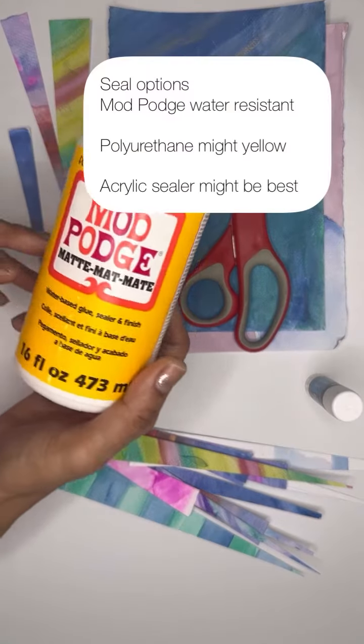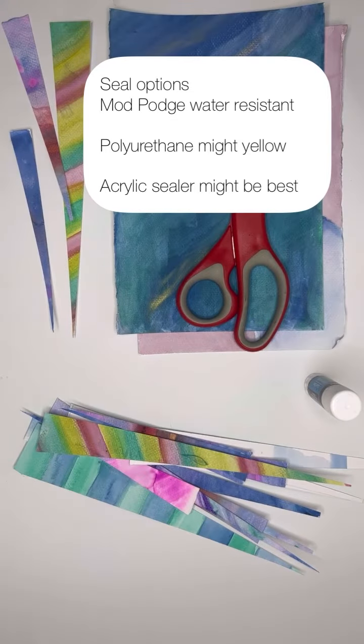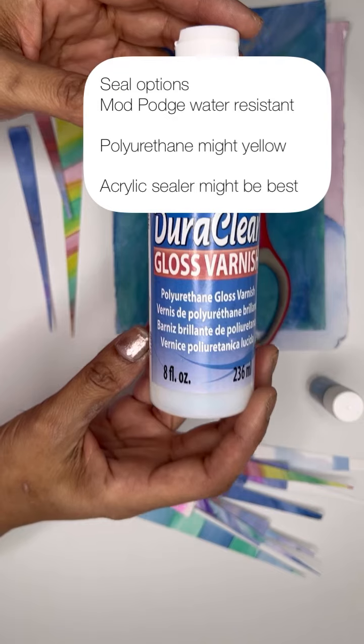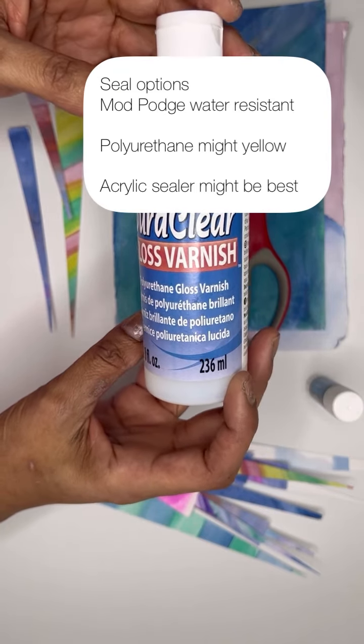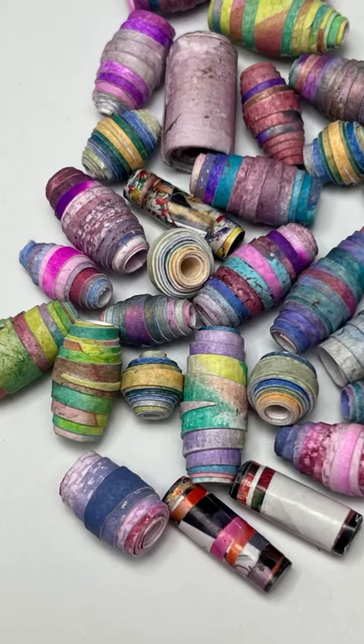Now you'll want to seal them to make them last longer. You can use Mod Podge that will make them water resistant but not waterproof. You can also use other glazes and varnishes like polyurethane that can yellow over time, so you'll want to be careful of that. I'm going to use an acrylic sealer for them.